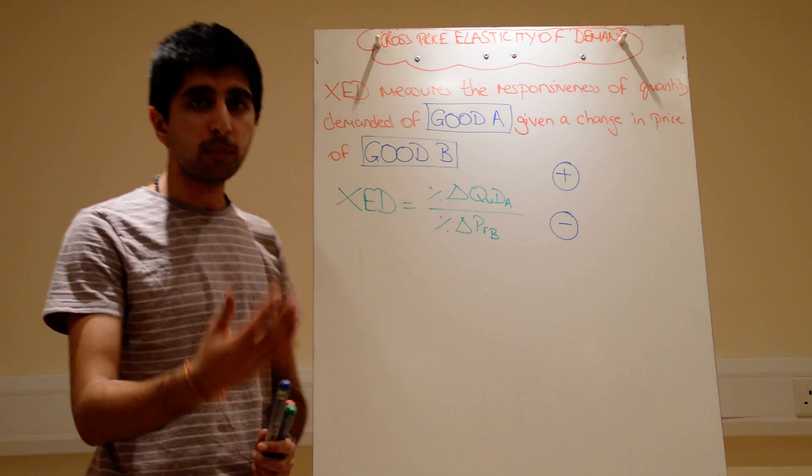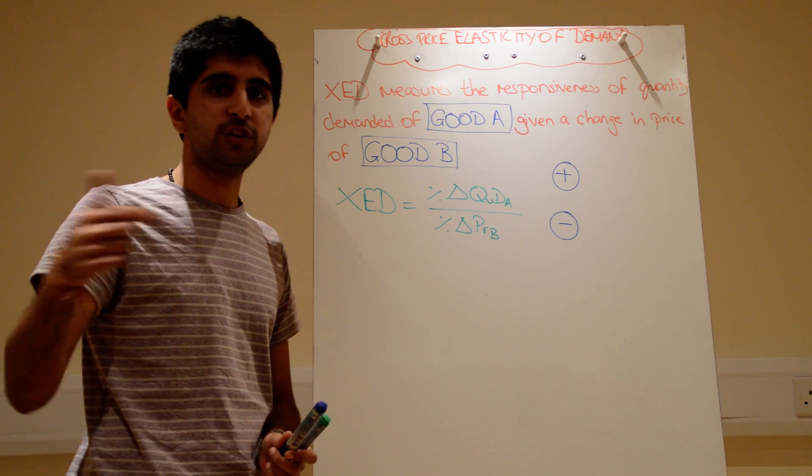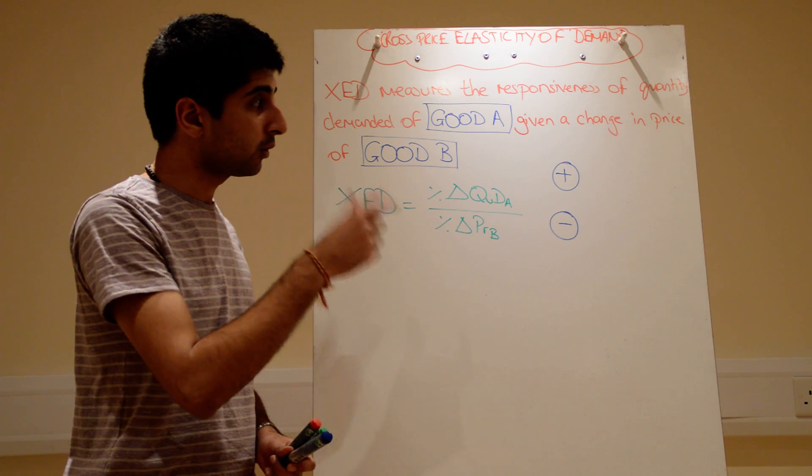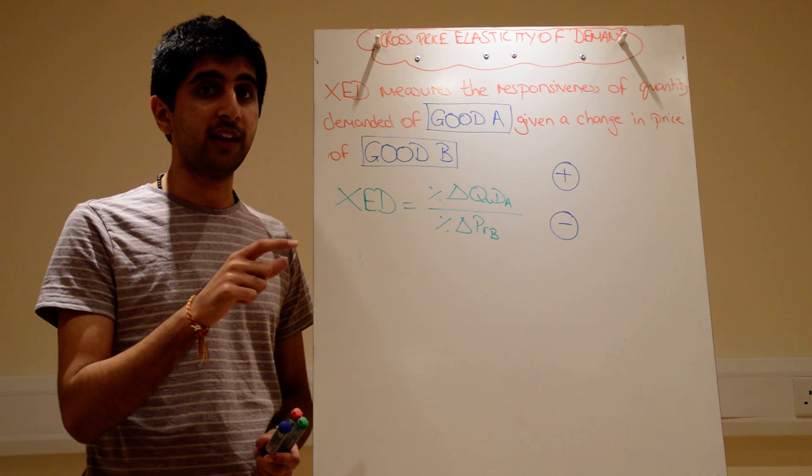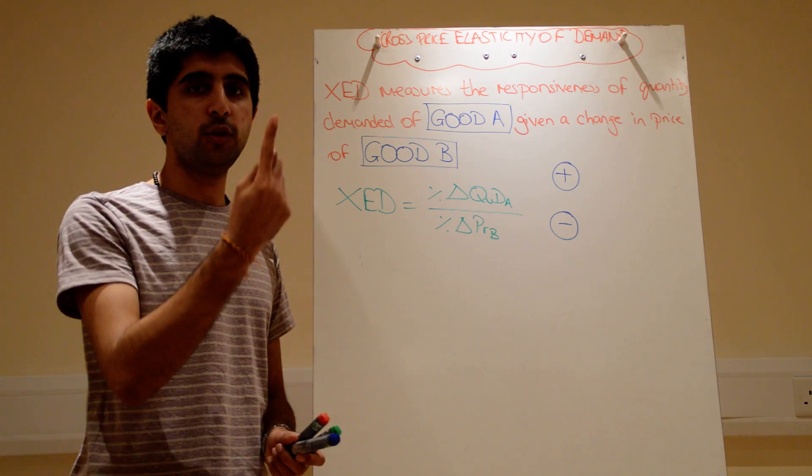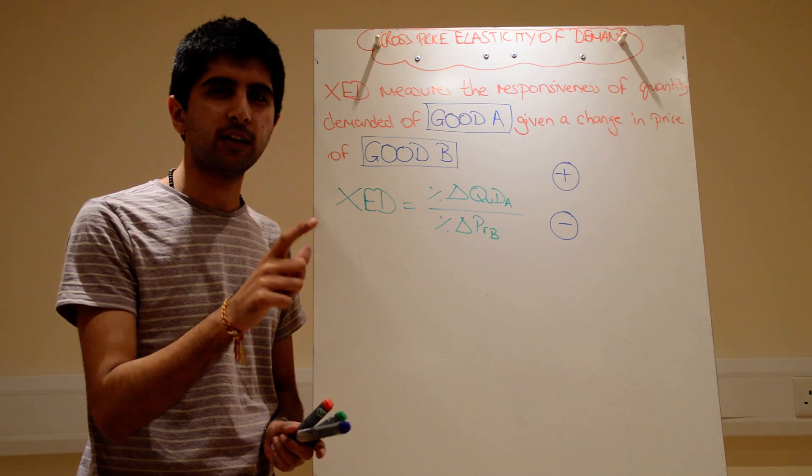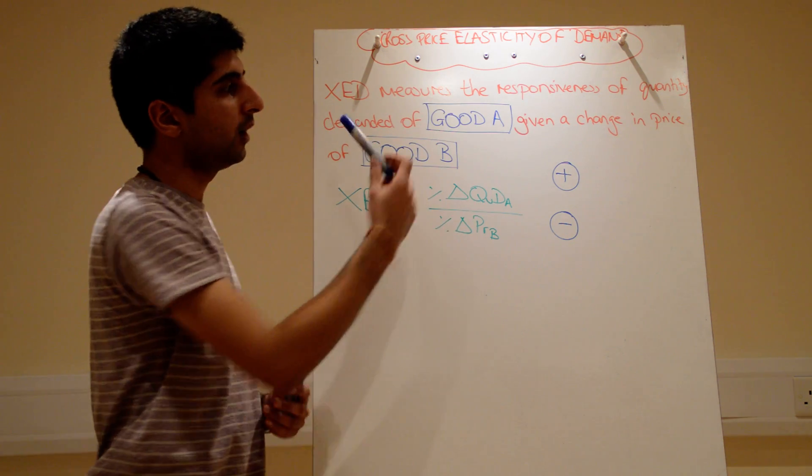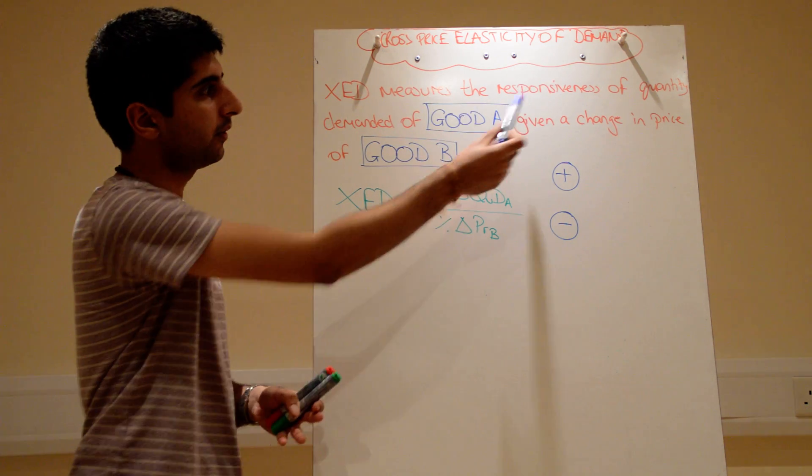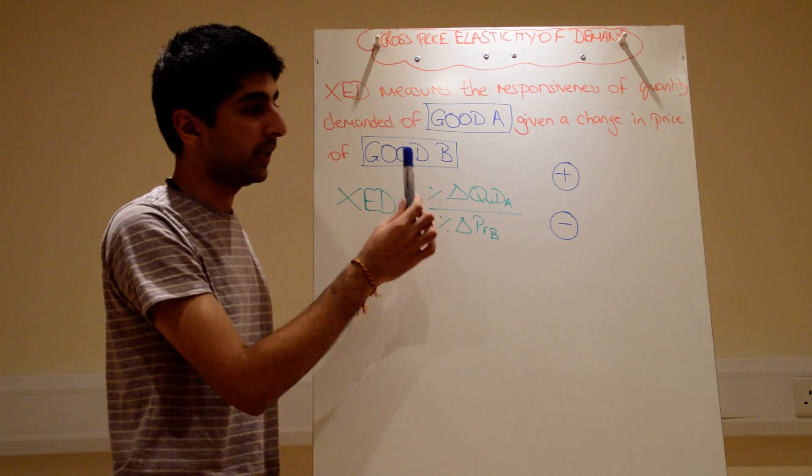So we know that for complements, when the price of one complement goes up, the demand for the other will shift to the left. We're trying to work out how much will demand shift to the left for that complement good. Whereas for substitutes, when the price of a substitute goes up, demand for another one will shift to the right. But how much will it shift to the right? How much does quantity demanded respond given a change in price of another good? That's the key thing: good A, good B.